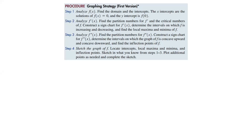We're going to look at a graphing strategy — this is our first version, with another version later. Step one: analyze f(x) — find the domain and intercepts. X-intercepts are solutions of f(x) = 0, and the y-intercept is f(0). Step two: analyze f'(x), find partition numbers and critical numbers, construct a sign chart, determine intervals of increase/decrease, and find local max and minima. Step three: analyze f''(x), find partition numbers, construct a sign chart, determine concavity intervals, and find inflection points. Step four: sketch the graph — locate intercepts, max/min, inflection points, sketch from steps one through three, and plot additional points as needed.